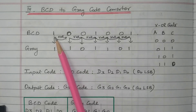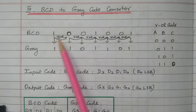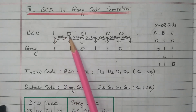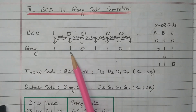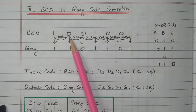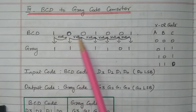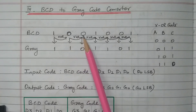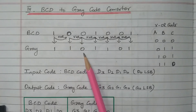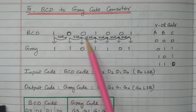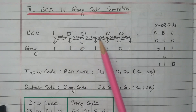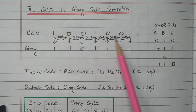Then perform the XOR operation between the first and second digit and write the result. Then perform the operation between the second and third digit and write the result. Like that, we need to perform the XOR operation between adjacent digits.